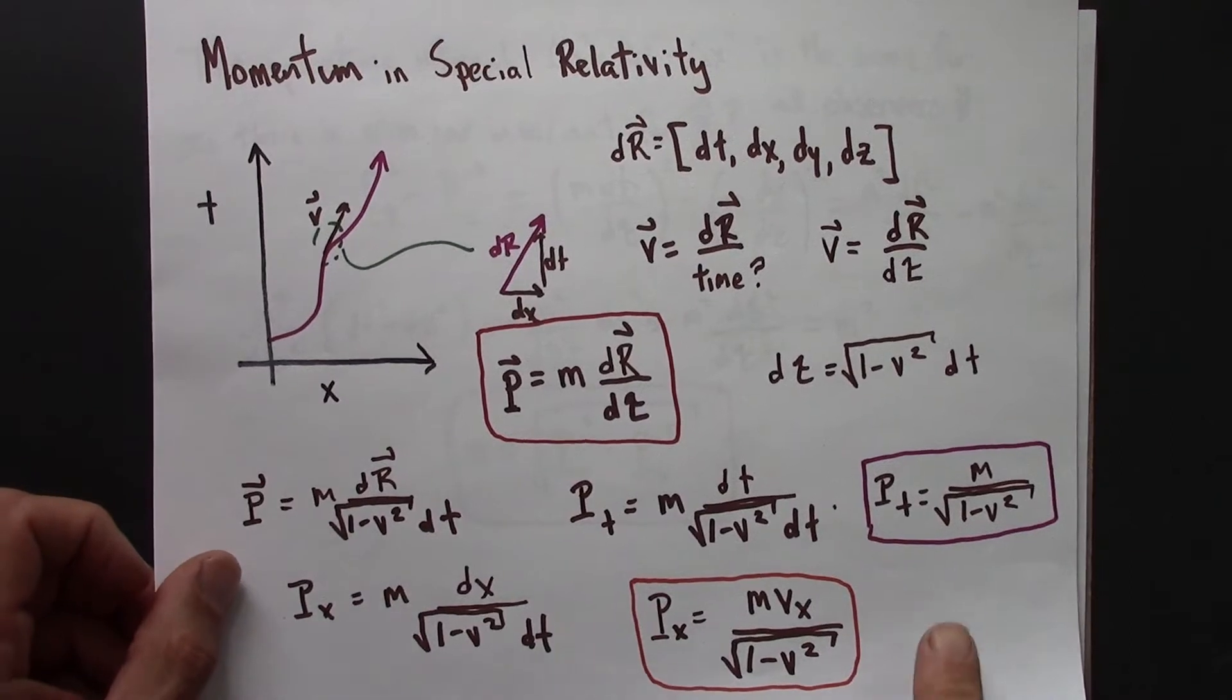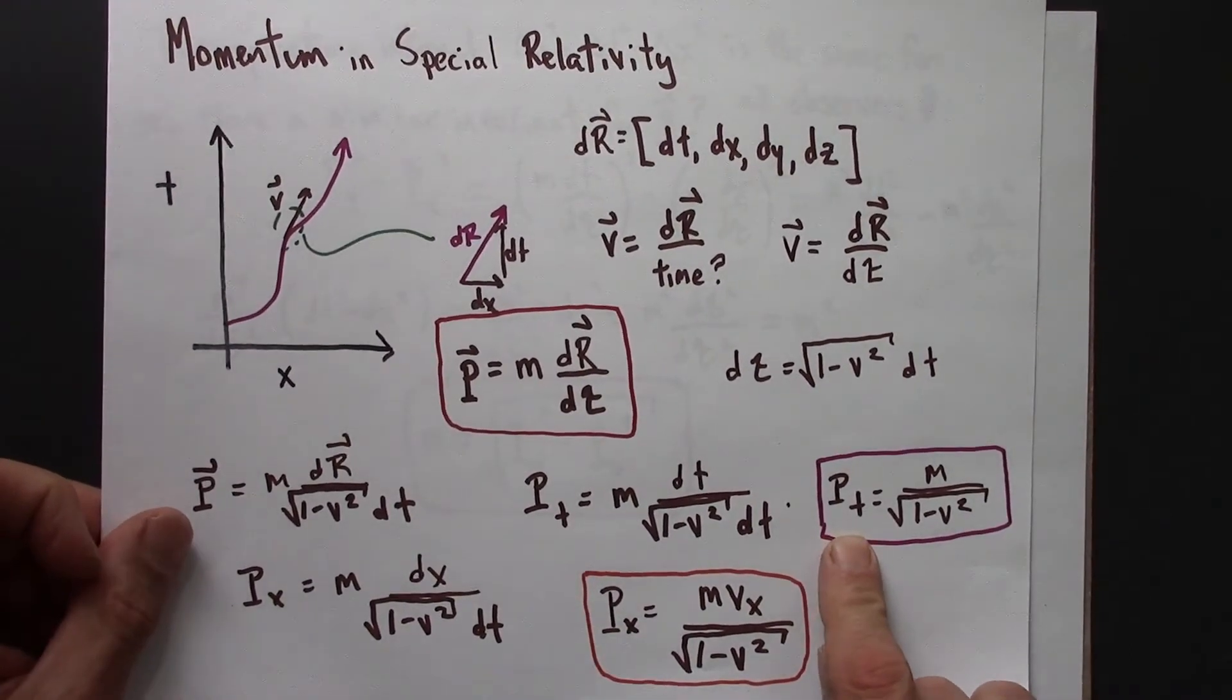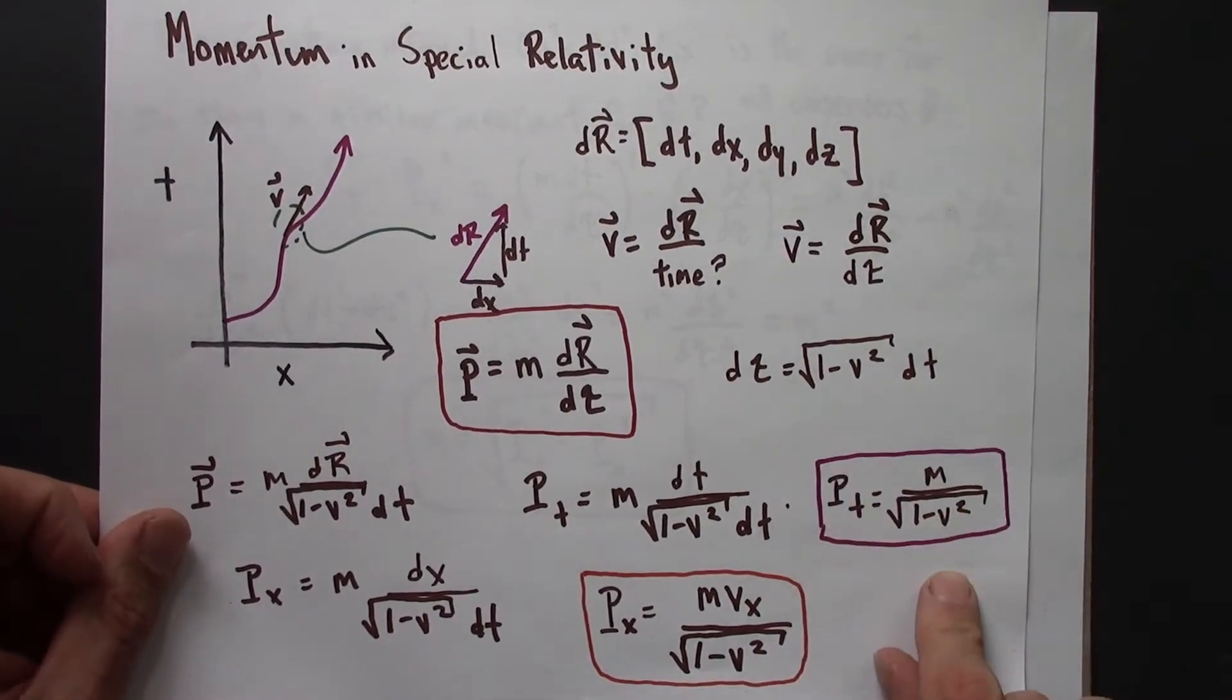In the previous video, we looked at some of the properties of Pt, the time component of 4-momentum, and we saw that we can interpret this as energy.